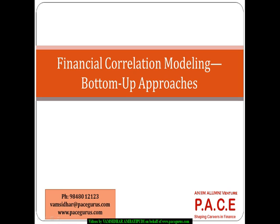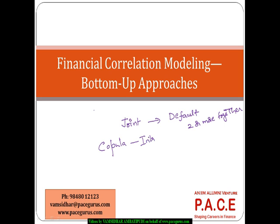Let's try understanding financial correlation modeling — different ways in which we can get into the computations of correlations and probably the risk, the joint probability distributions, which will help us understand the default probabilities of two or more assets together. By looking at the correlations, how do I really build up what is the joint probability of default? The focus here is only on the Copula-based model and a very preliminary introduction of this concept.